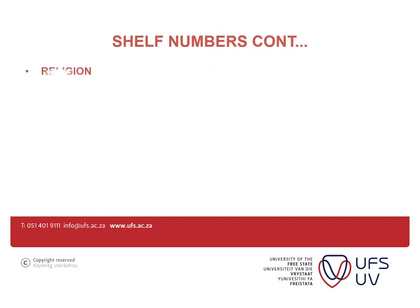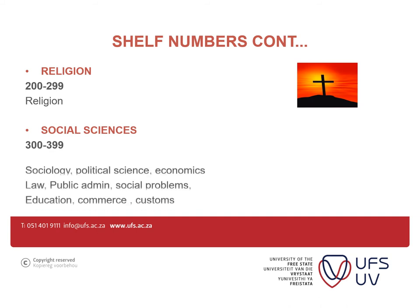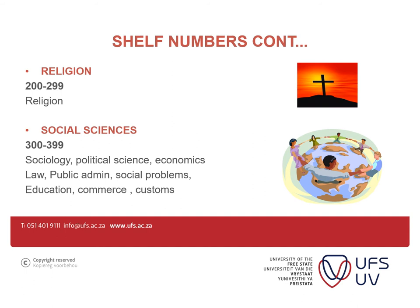Continuing with shelf numbers: 200 to 289 is religion. Then we have social sciences, which fall under 300 to 399. Under social sciences we have sociology, political science, economics, law, public administration, social problems, education, commerce, and customs. For psychology, you'll find books from 300 to 309, and social problems at 360 to 369. Economics is at 330 to 339. We don't have law at the university. Public administration is 350 to 359. Education is 370 to 379, and commerce is 380 to 389.